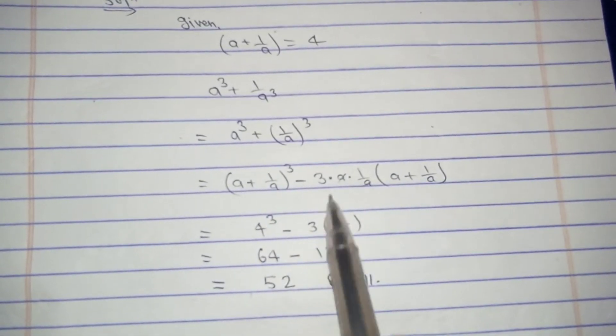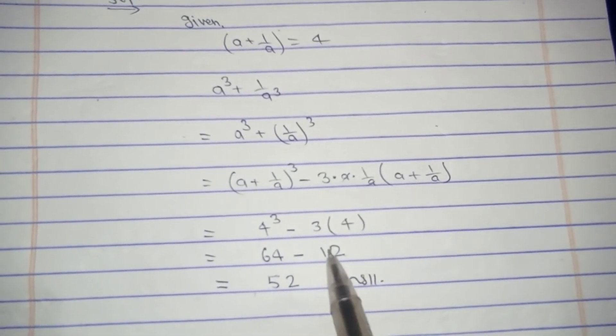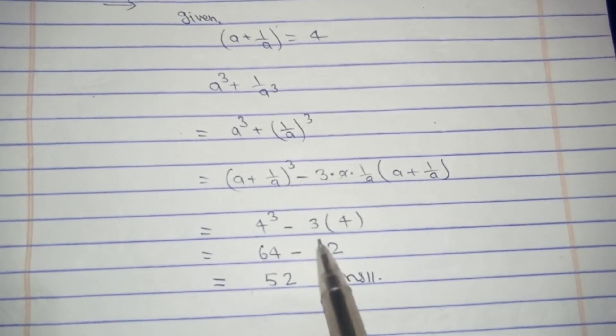And a plus one by a is four, so a plus one by a cube is four cube. And here three a and a get cancelled, so this is three is here, and a plus one by a is here. So four cube is 64, and three fours are 12.